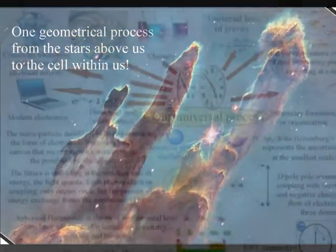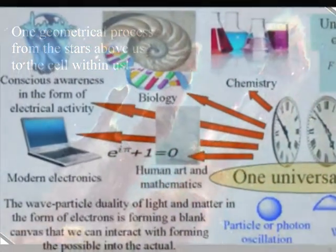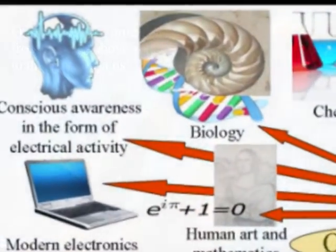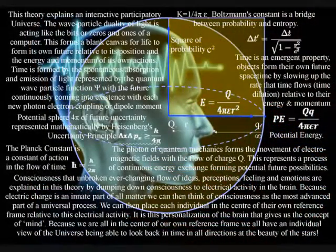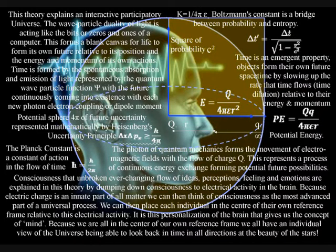The second reason why this theory is difficult to comprehend is represented in the top left hand corner of the diagram, and it is because conscious awareness in the form of electrical activity in the brain is an integral part of this process.